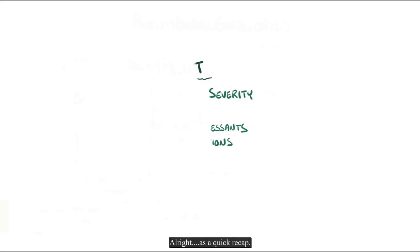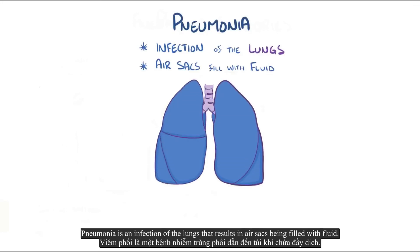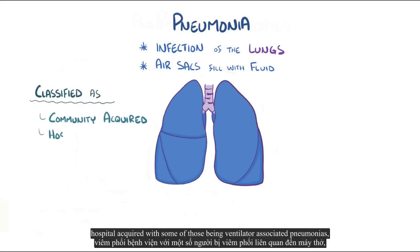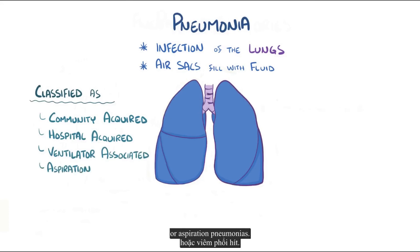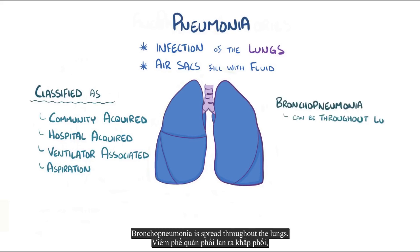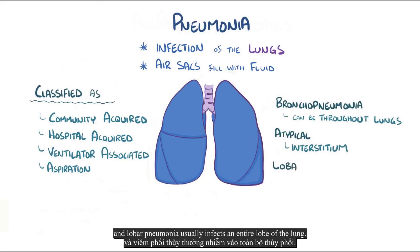As a quick recap, pneumonia is an infection of the lungs that results in air sacs being filled with fluid. The disease can be classified as community-acquired, hospital-acquired — with some being ventilator-associated pneumonias — or aspiration pneumonias. Pneumonia can also be characterized by where the infection is: bronchopneumonia is spread throughout the lungs, atypical or interstitial pneumonia happens in the interstitium around the alveoli, and lobar pneumonia usually infects an entire lobe of the lungs.